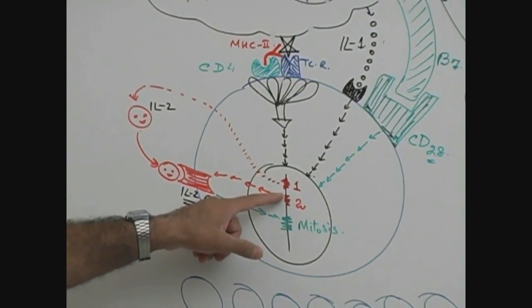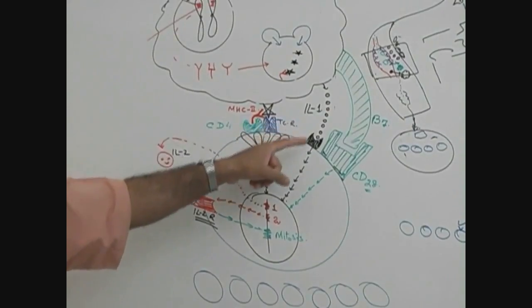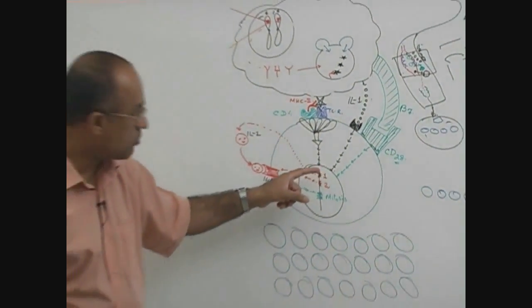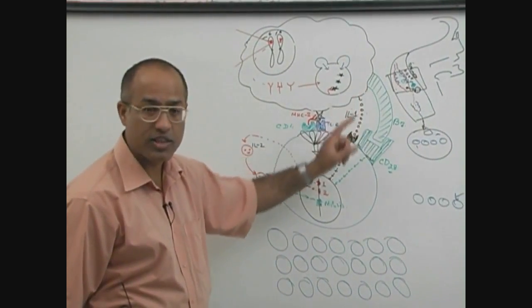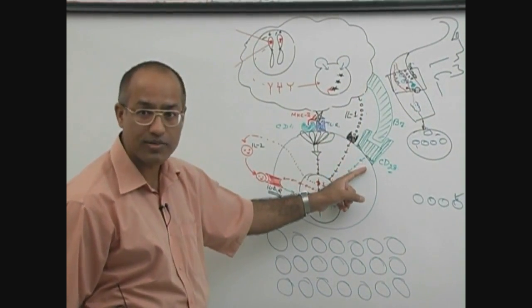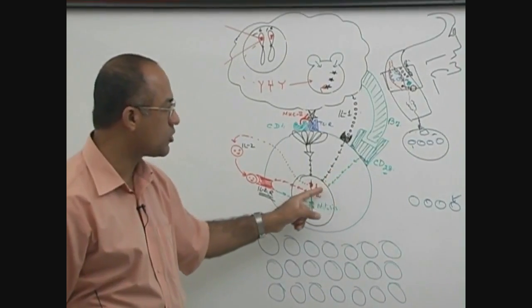At the same time, there is additional stimulation. For example, macrophage releases interleukin-1 which gives extra stimulation. Moreover, B7 from the macrophage interacts with CD28 of the T cell and that also gives a signal to the nucleus.